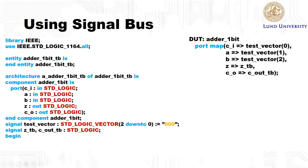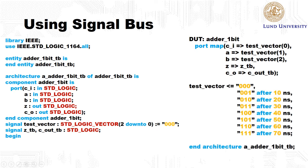The input c_i is connected to bit number zero, input a is connected to bit one, and input b is connected to bit number two. Now to generate input we do a similar thing as in the previous example, but now we assign the value to this test vector instead. We start with a value zero zero zero, and then after 10 nanoseconds we apply the input zero zero one, and then zero one zero after 20 nanoseconds. All this timing is counted from the beginning of the simulation.